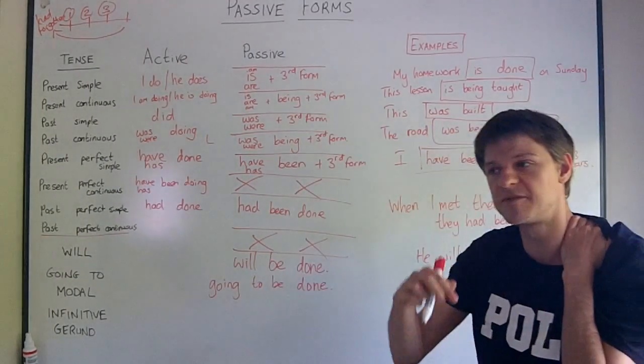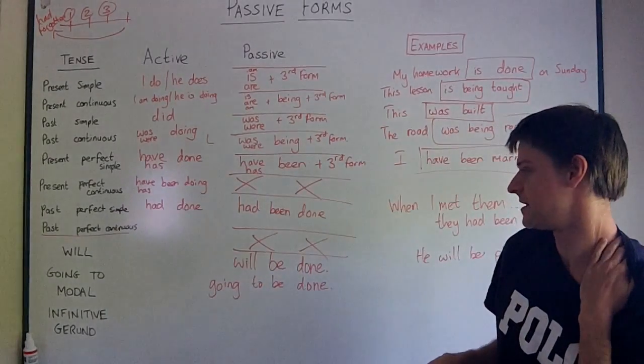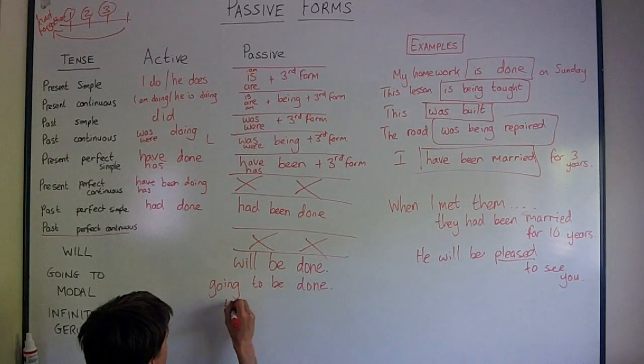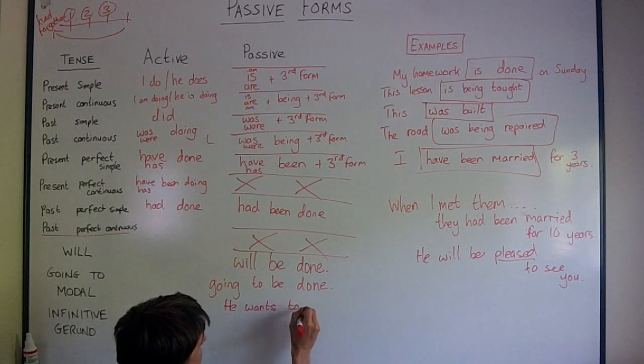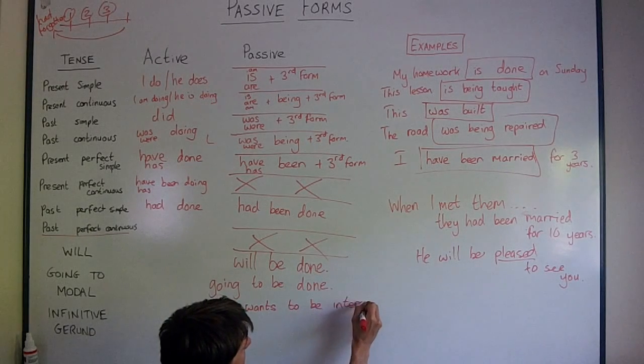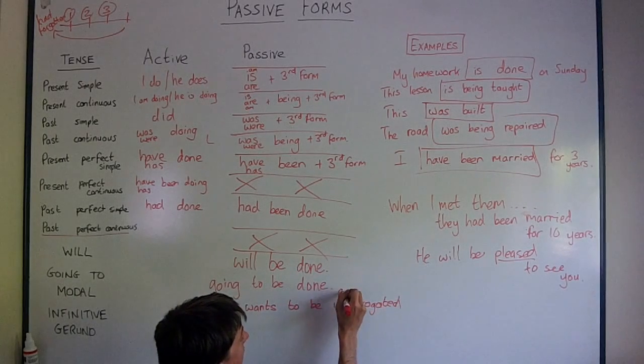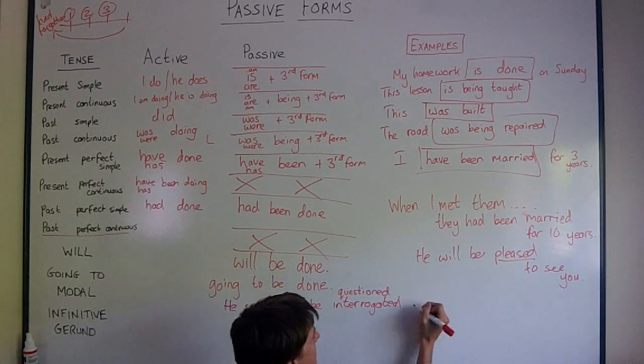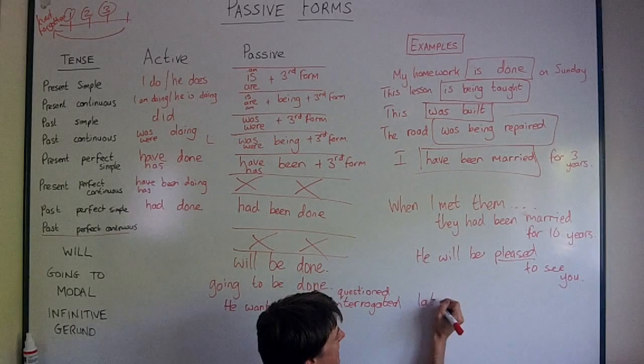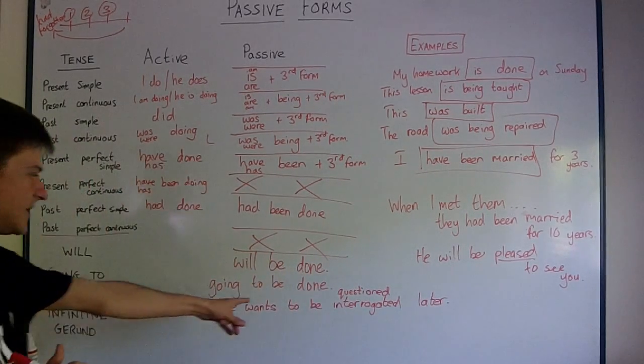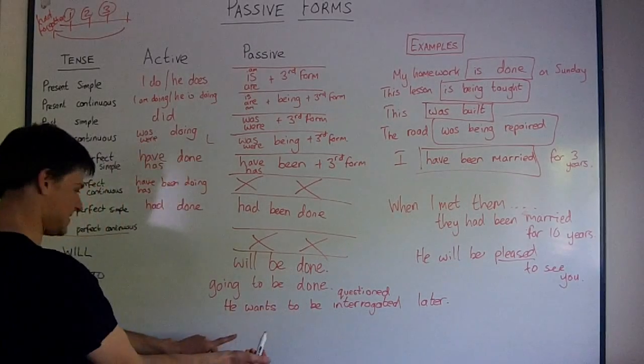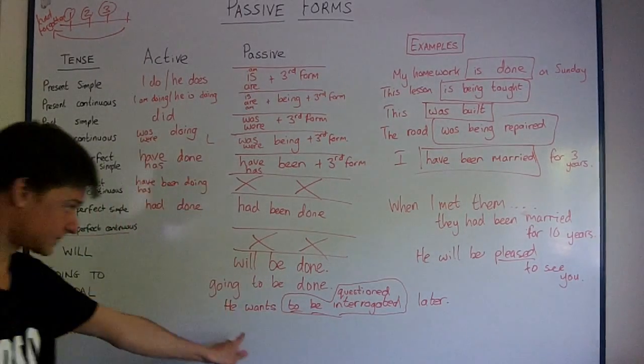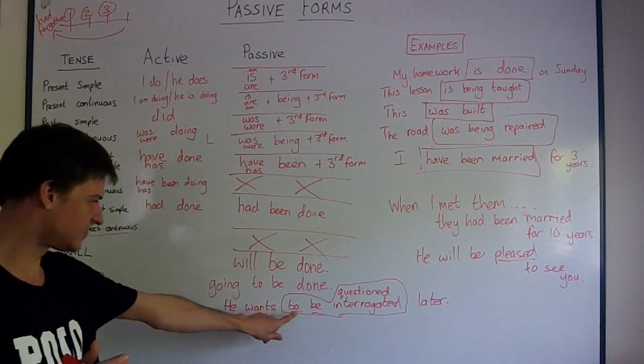Infinitive now. Some verbs take infinitive and some verbs take gerund. So he, if we're talking about a criminal, he wants to be interrogated. Interrogated means questioned, and you can use that word also. The criminal wants to be questioned, wants to be interrogated, later. Any word here, or by a man, by a woman, it doesn't matter. But he wants to be questioned. So we've noticed with to plus infinitive, just use to be, and then the third form. What you would expect, really. I think it's very logical, this. He wants to be questioned later. This is to plus infinitive passive.